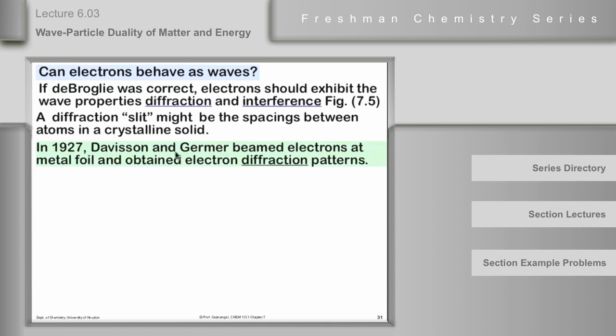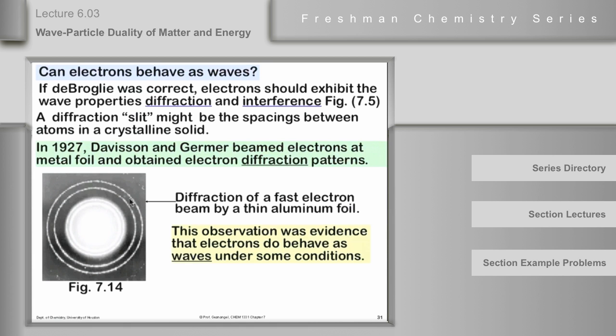The first ones who were successful were a couple of American physicists. There haven't been many Americans in my stories for you here yet. But Davison and Germer were American physicists. They produced electron beams.